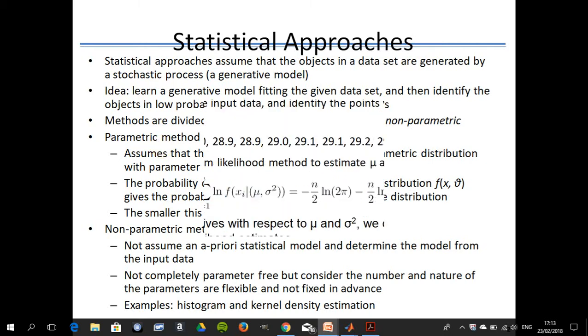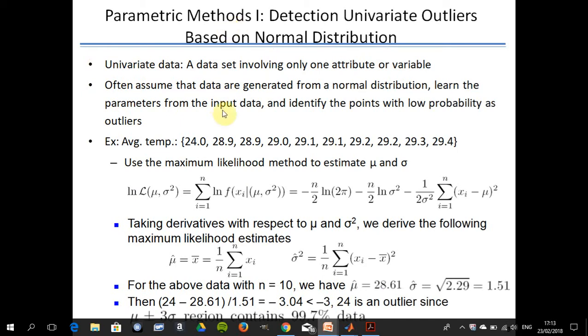If you do it based on the normal distribution, you have a set of data, you generate the mean and the standard deviation, and you calculate the Z-score. The Z-score that we get for this particular observation, 24, where the mean is 28.61 and the standard deviation is 1.51, is minus 3.04. The mean plus or minus 3 standard deviations contains 99.7% of the data, and since minus 3.04 lies outside that, you would conclude that the reading 24 is an outlier.